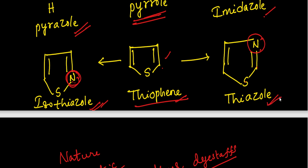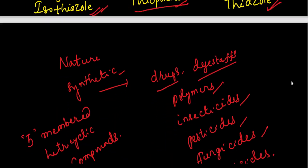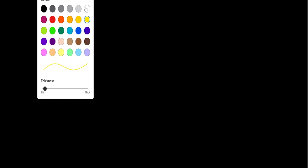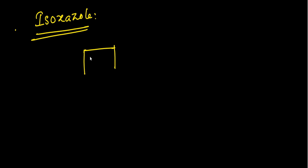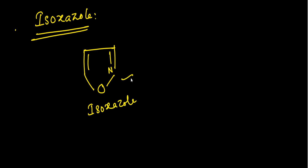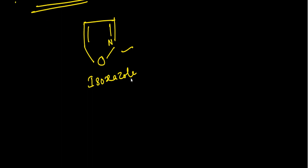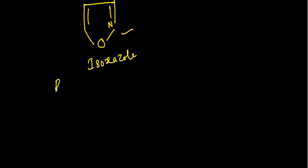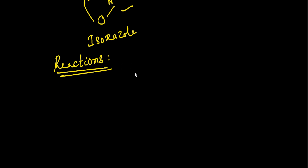So from furan, isoxazole and oxazole are derived; from pyrrole, pyrazole and imidazole; and from thiophene, isothiazole and thiazole. Today we are going to discuss about isoxazole first. Isoxazole is derived from furan — it is a five-membered heterocyclic ring with an N functional group substituted at the second position.